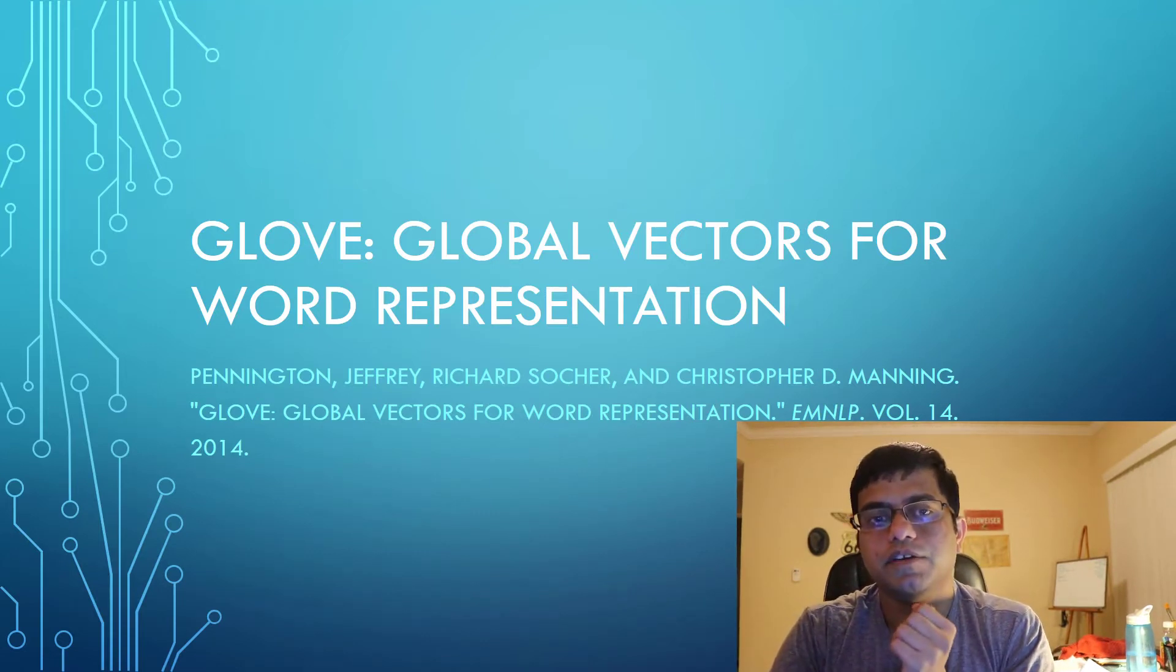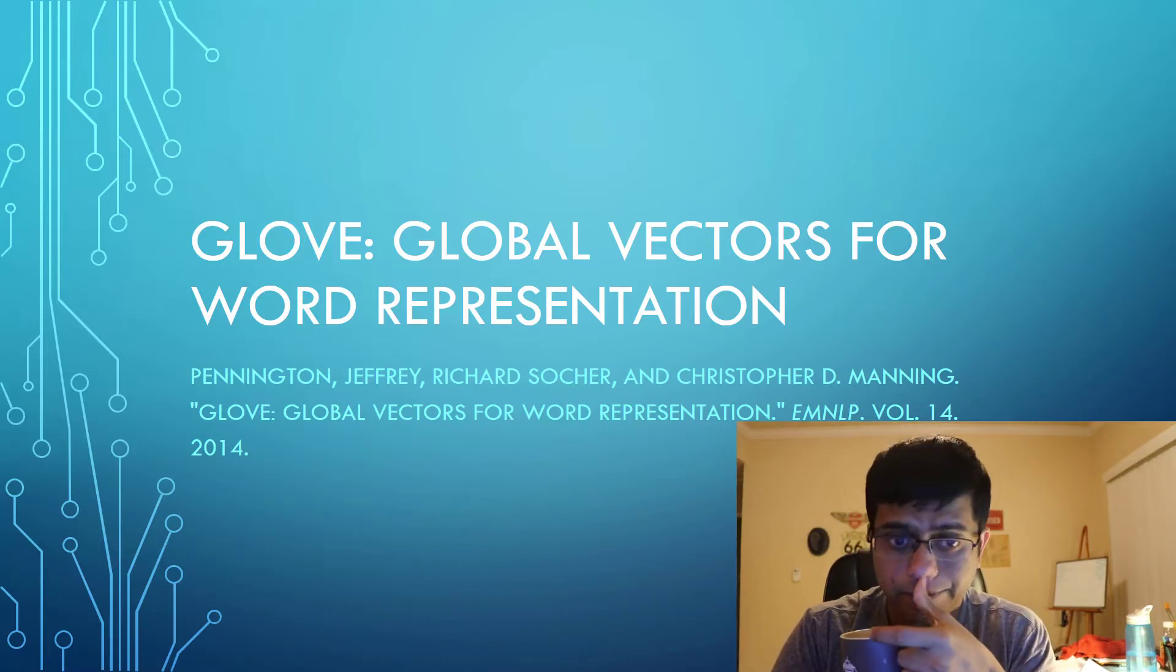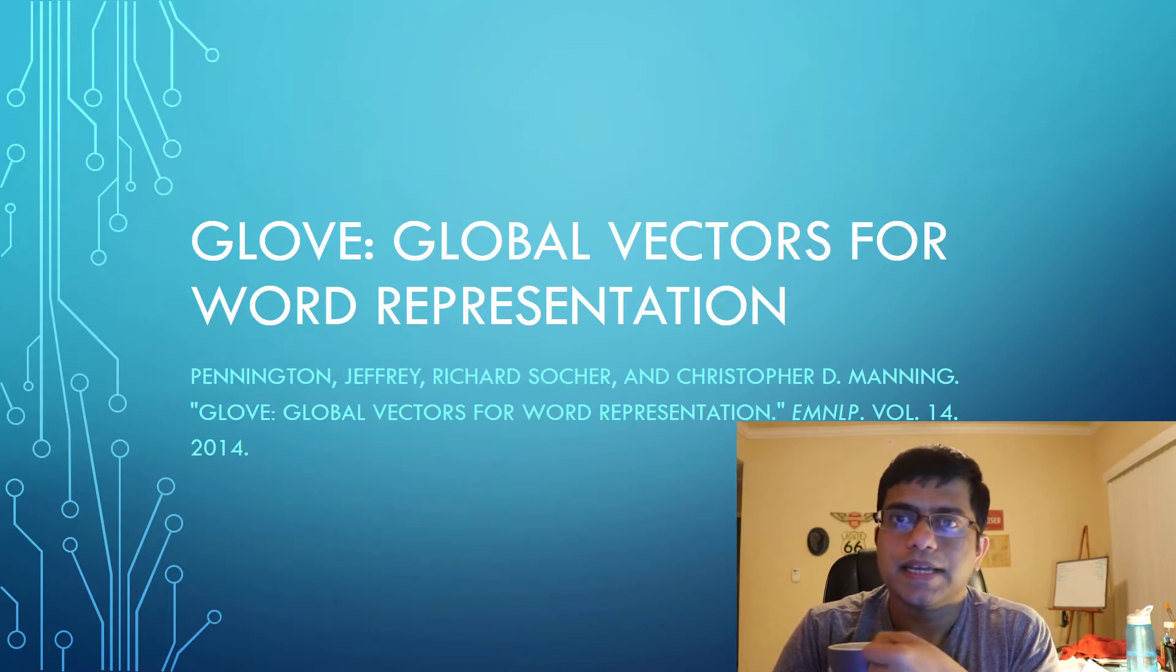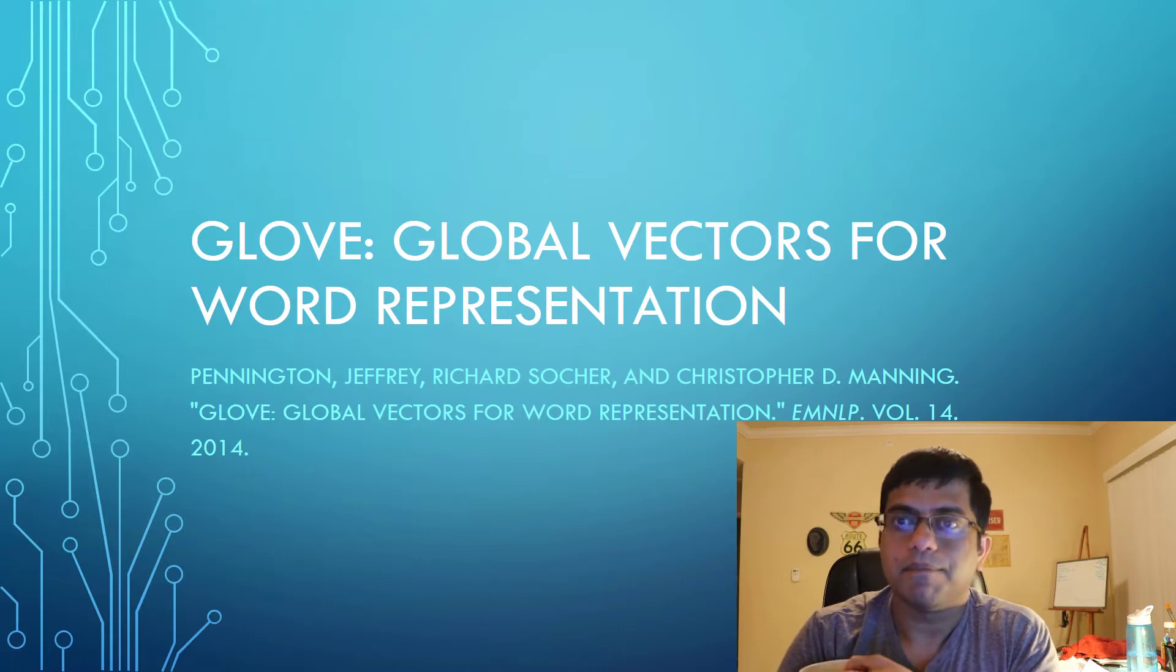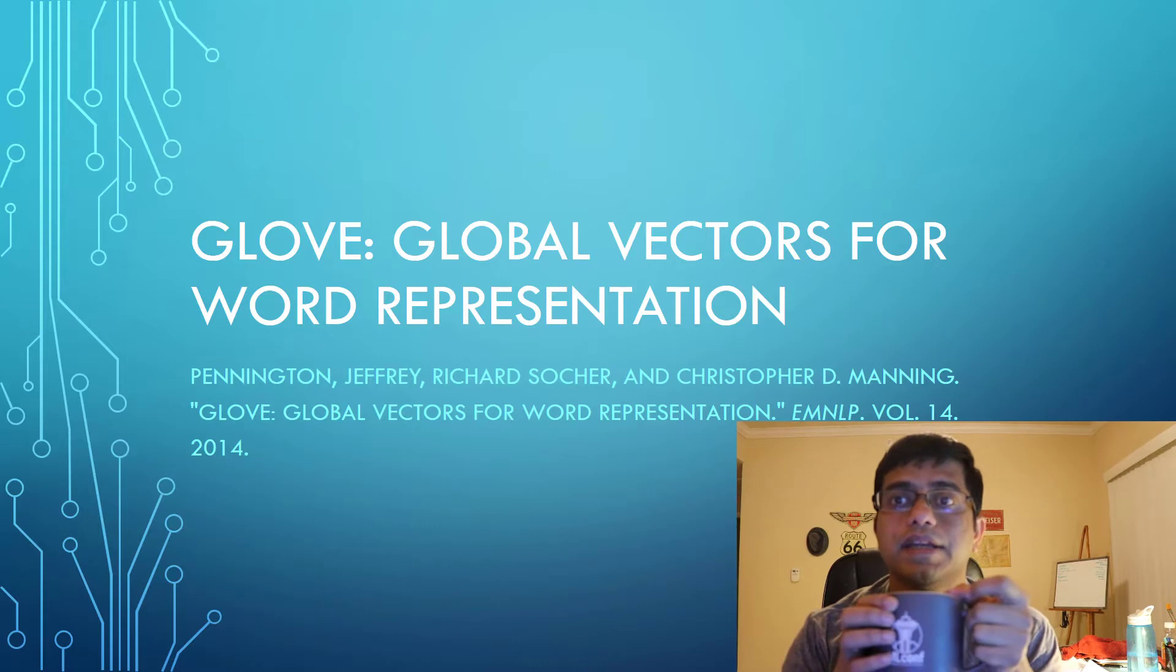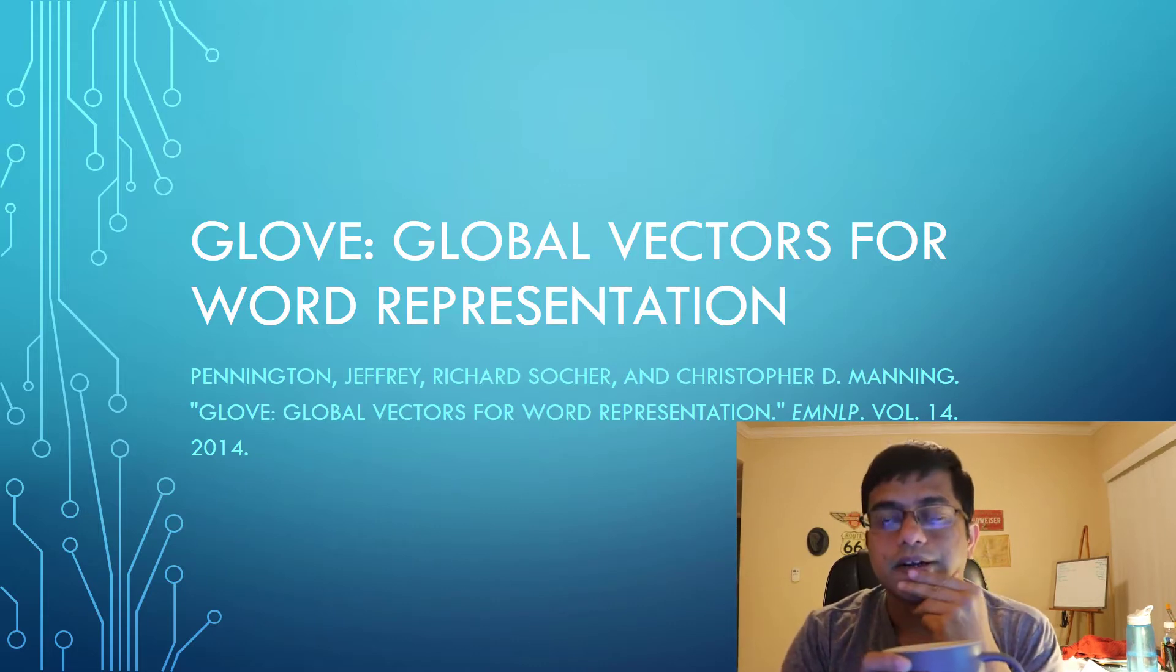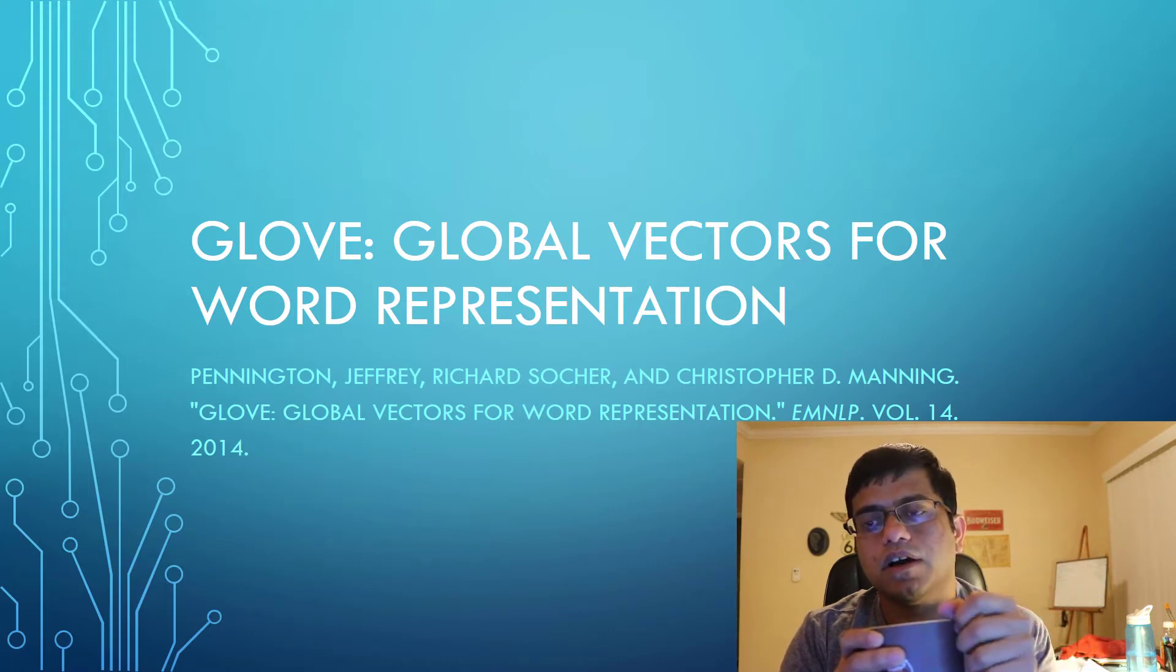Let's dive deep into the details of the paper in discussion today. The paper is called GloVe: Global Vectors for Word Representation. This paper was introduced by Pennington, Socher, and Manning at Stanford and was published in 2014. I highly recommend checking out the course content at Stanford for natural language processing. It's been an inspiration for me and I've completed the whole course.